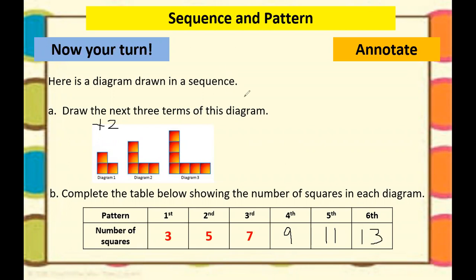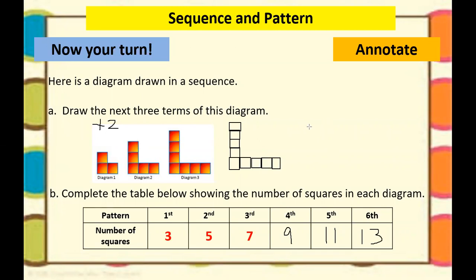Now you can do this one — this is very easy. Counting: one, two, three, four, five, six, seven. I will add two, so 11. Our answer here is correct. Then again, it will become 13. Simple. I hope you understand, Year 6, the lesson about sequence and pattern, or shape patterns.